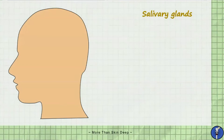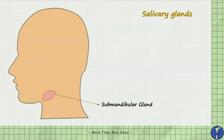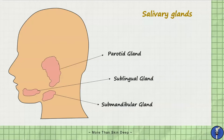The three salivary glands of the head and neck include the submandibular gland, the sublingual gland and finally the parotid gland. The parotid gland is the largest salivary gland and is responsible for approximately 30% of our total saliva production. Unlike other salivary glands, it produces purely serous secretions in adults and is enclosed in a tough fibrous capsule.